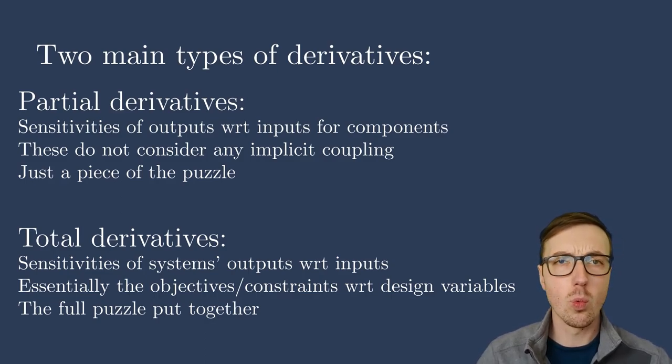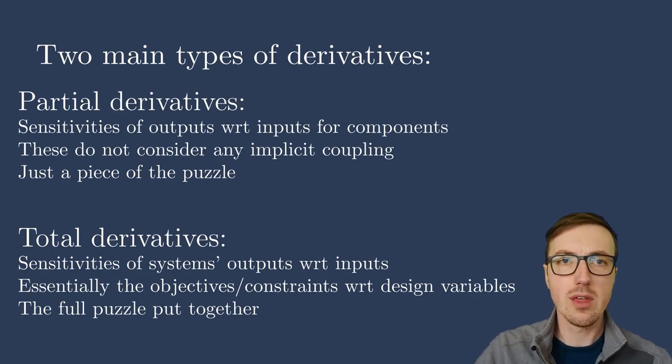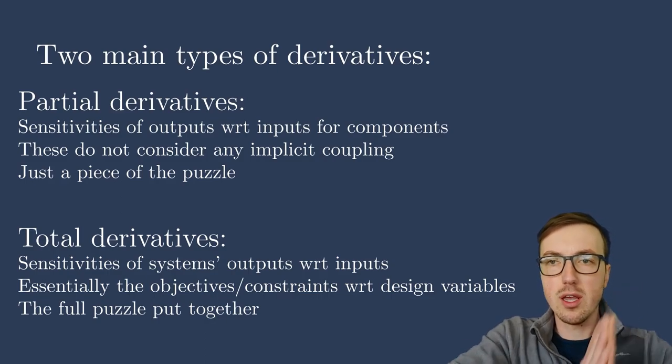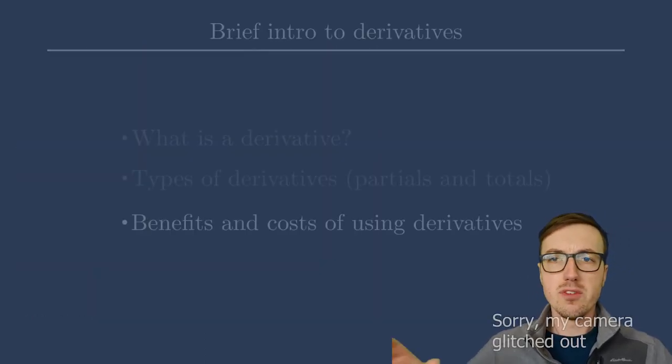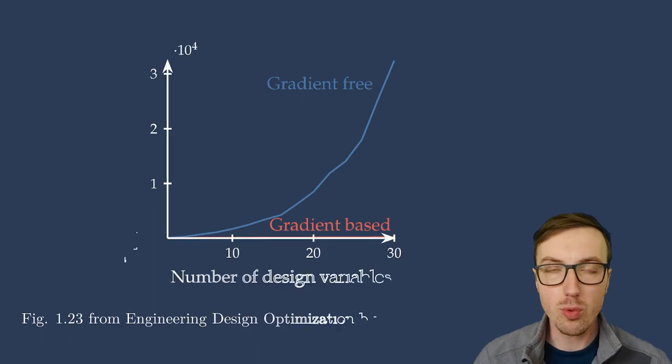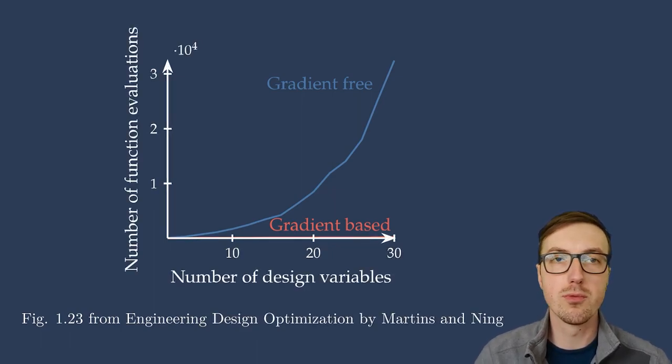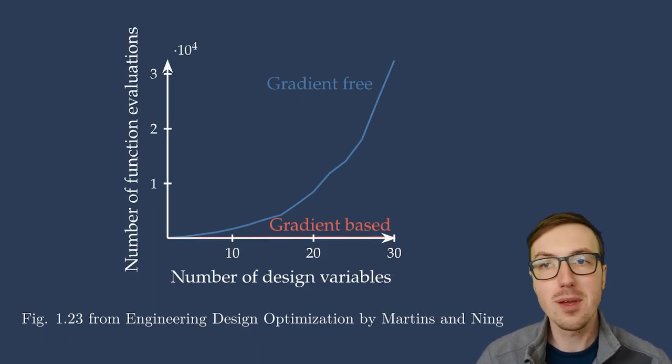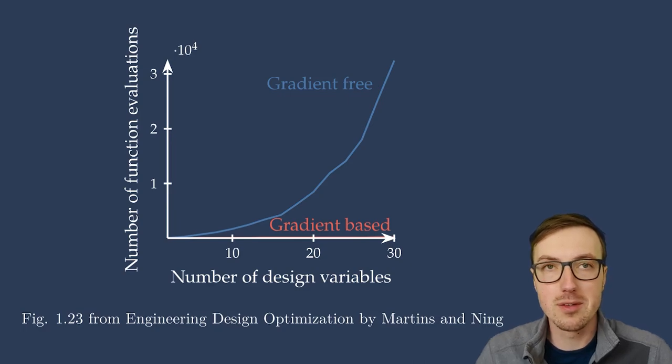Now again, there are lots of different ways to compute derivatives, and I'm not getting into that here. I'm simply introducing the idea of partial and total derivatives. Let's talk a little bit about the pros and cons, the benefits and the costs of using derivatives. So I recommend using gradient-based optimization, and to do so efficiently, you have to compute your derivatives efficiently. I've shown figure 1.23 from the engineering design optimization book before, and I will show it more and more because it's so compelling.